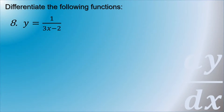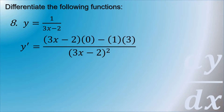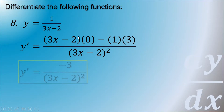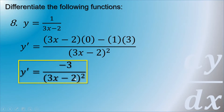Next: y is equal to 1 over (3x minus 2), using the division rule. Taking the denominator (3x minus 2) times the derivative of the numerator (which is 0), minus the numerator (1) times the derivative of the denominator (which is 3), all over the denominator squared (3x minus 2) squared. Cancelling the zero term, the numerator simplifies to negative 3, giving y prime equals negative 3 over (3x minus 2) squared.